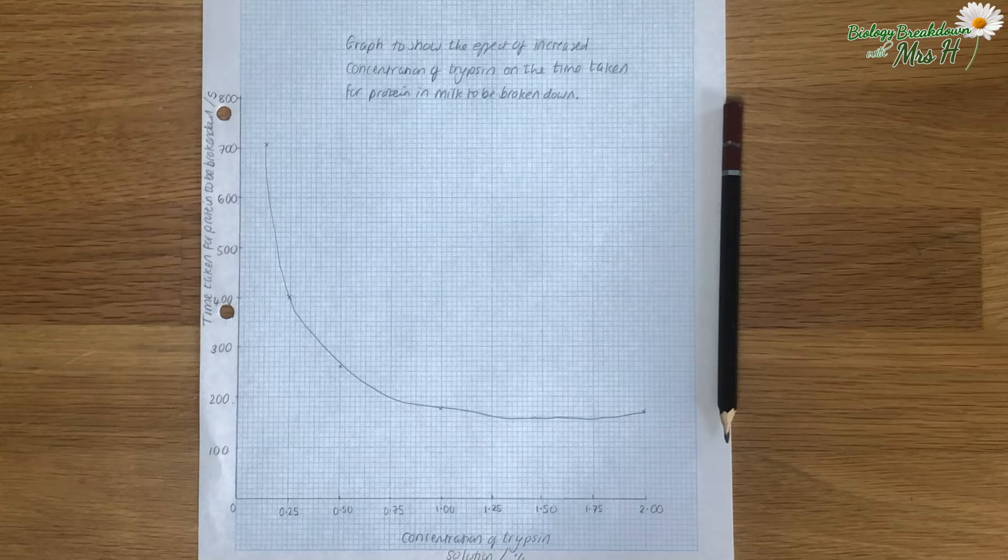This graph supports a theory on the effect of increasing enzyme concentration because you can see that the higher the concentration of trypsin the less time it takes to catalyse the breakdown of protein in the milk and that will be because there are more active sites available to catalyse the breakdown of the protein substrate in the milk.